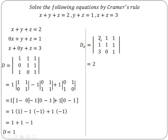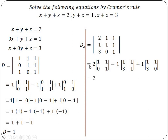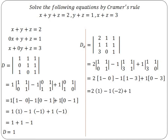Expanding Dx: first element 2 as it is — remove the first row and first column, remaining elements give 1 into 1 is 1, minus 0 into 1 is 0. Minus 1 as it is — 1 into 1 is 1, minus 3 into 1 is 3. Plus 1 as it is — 1 into 0 is 0, minus 3 into 1 is 3. That equals 2 into 1, minus 1 into 1 minus 3 which is minus 2, plus 1 into 0 minus 3 which is minus 3. So 2 plus 2 minus 3 equals 1. Therefore Dx equals 1.